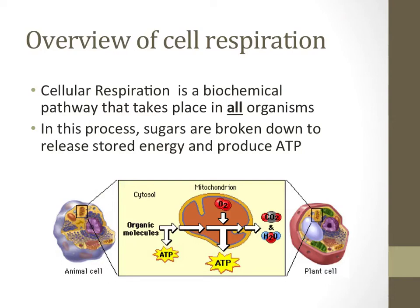While photosynthesis is a process that only occurs in autotrophs, cell respiration is a pathway that occurs in all organisms, autotrophs and heterotrophs. To oversimplify things, cell respiration is a process by which sugars are broken down and the energy in those sugars is used to form ATP, as the picture on the bottom of this slide shows.